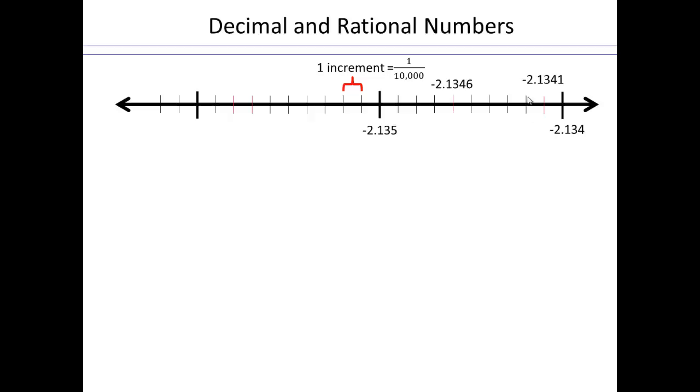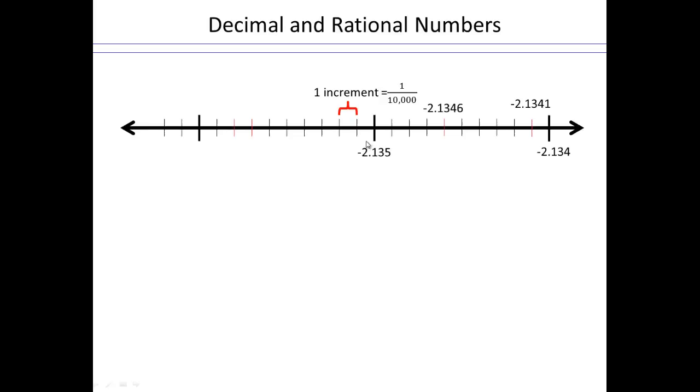The numbers continue: 2.1347, 2.1348, 2.1349, and that will become the 5. So when it's negative number, remember the order switches because we're going to the left instead of to the right.